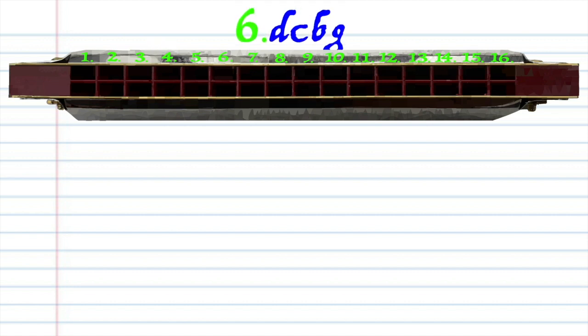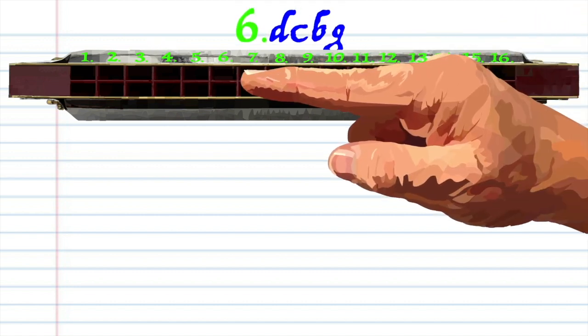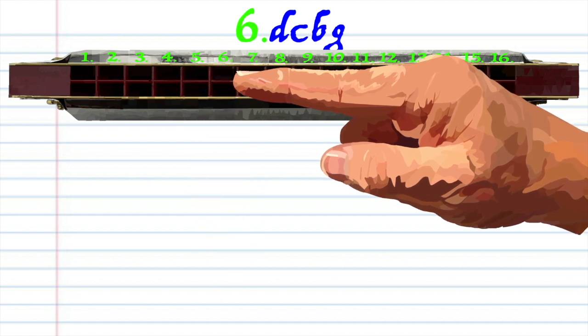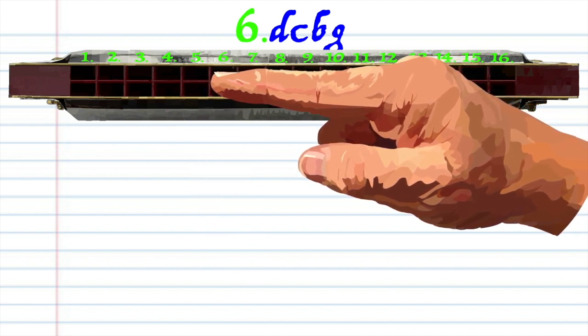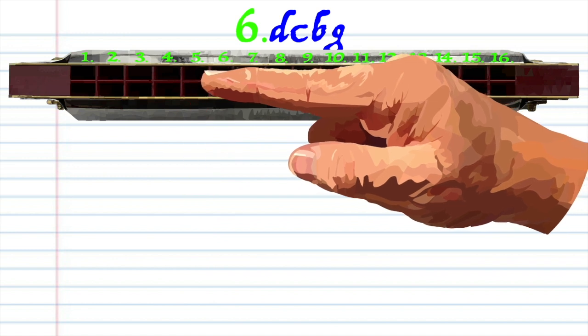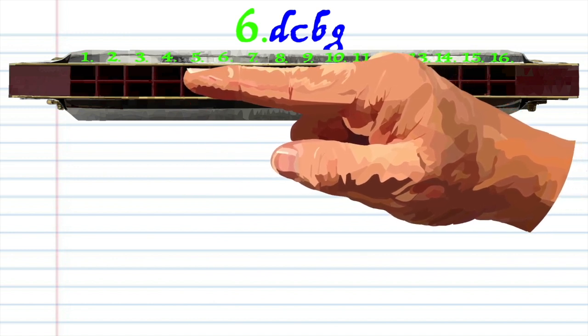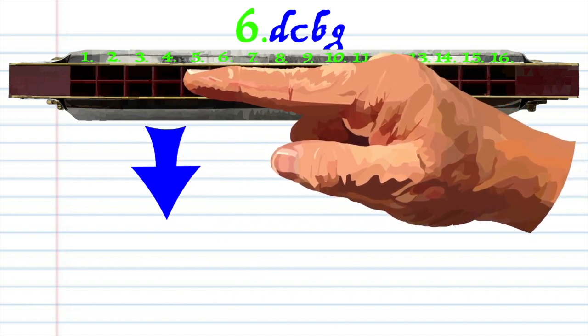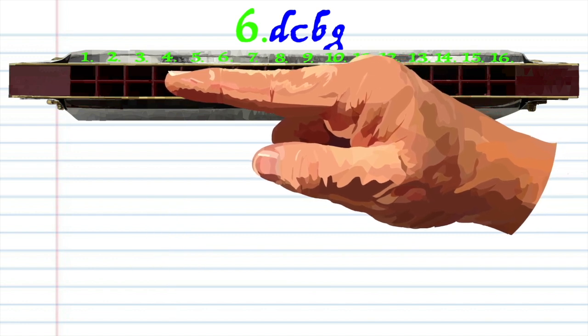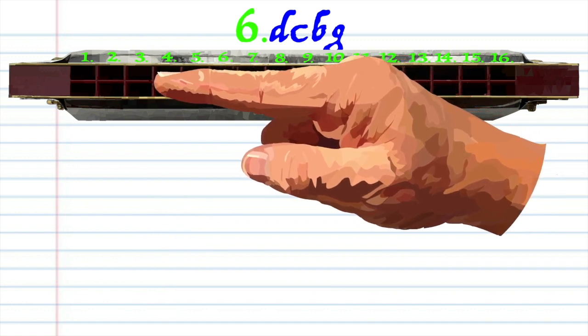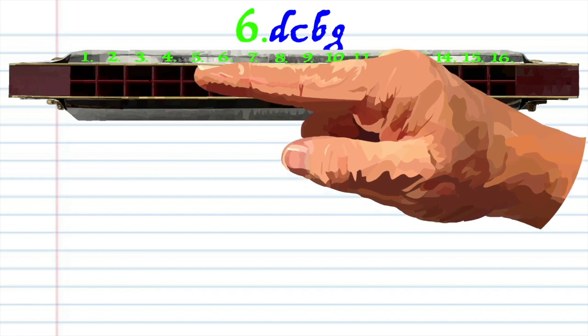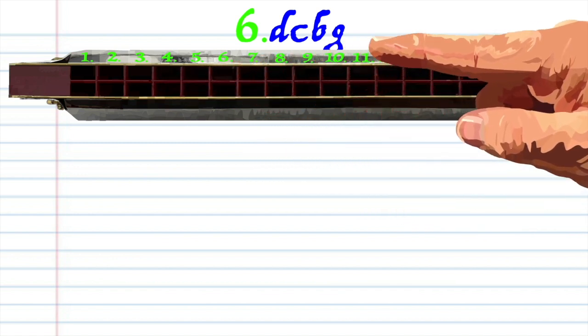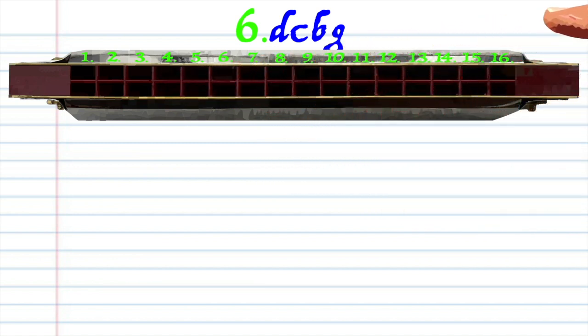For phrase 6, breathe in through 6, blow into 5, breathe in through 4, and blow into 3. Practice this until you end up with something that sounds like this.